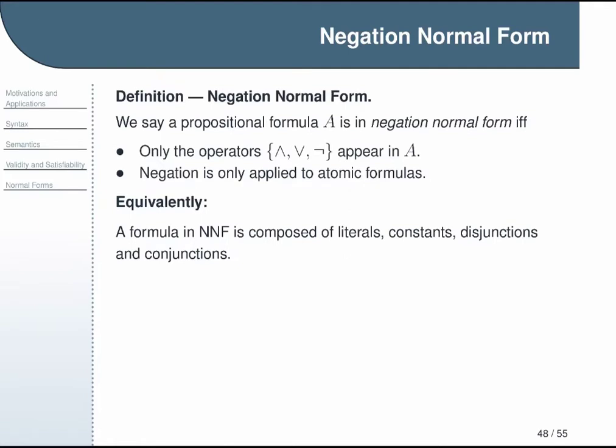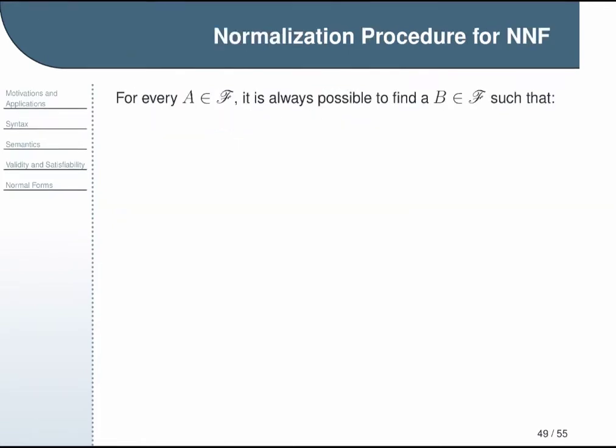So that is what negation normal form means, and the next thing is how do we get some? How do we go from some arbitrary formula to a formula in NNF? The good news is this is always possible. For any A that is a formula, there is always another formula B such that it is equivalent to A and it is in negation normal form. So we call this the negation normal form of A. The way that we know B exists is that we have an algorithm that tells you how to produce it from any A.